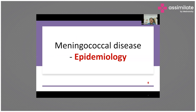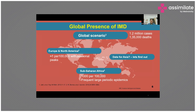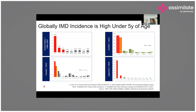Regarding global epidemiology, IMD is estimated to affect 1.2 million people annually, resulting in more than 1.35 lakh deaths. The disease is endemic in Europe and North America with an overall incidence of 1 per 1 lakh population. Sub-Saharan Africa is considered the meningitis belt, with large periodic epidemics, where incidence may reach up to 1,000 per 1 lakh population, particularly in children under 5 years of age.